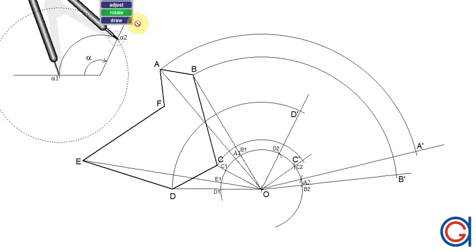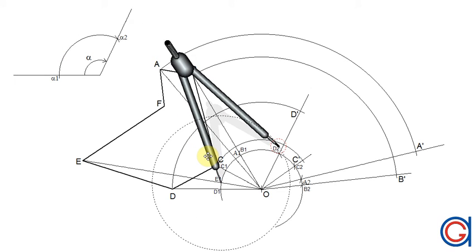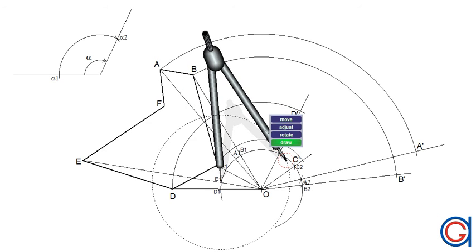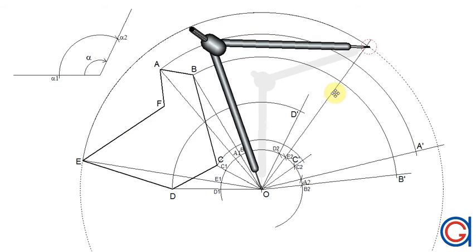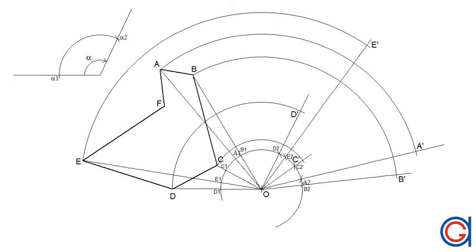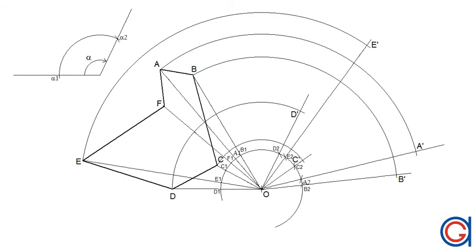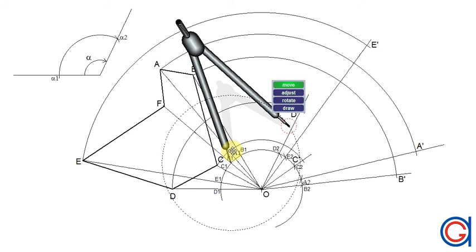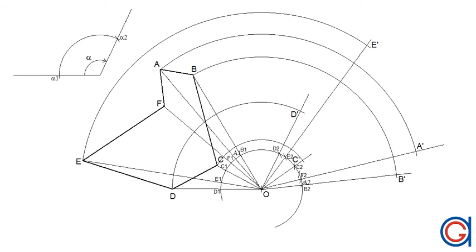We are going to do the same process with vertex E, obtaining its rotation equivalent, which will be E prime, as can be seen here. And now finally we are going to rotate our vertex F, obtaining our new rotation point F prime.